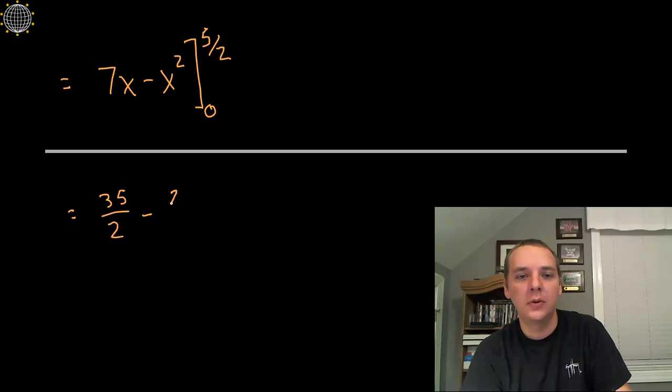So let's see, 70 over 4, so 35 over 2, 70 over 4 minus 25 over 4 would be 45 over 4. Alright, so that's our first term, but we're not done yet.